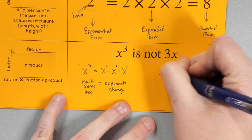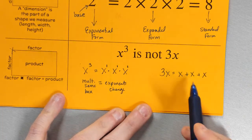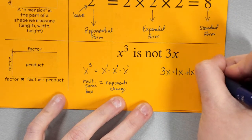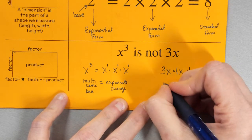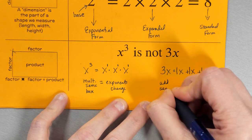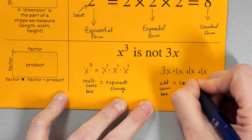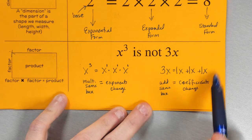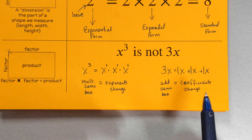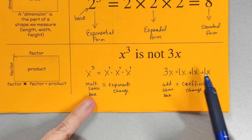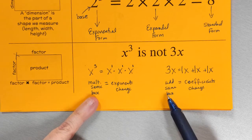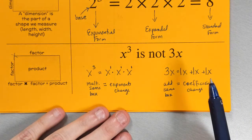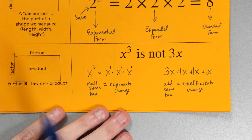Now let's look at 3x. 3x is the same thing as x plus x plus x, because multiplication is repeated addition. All I'm doing is showing 1x plus 1x plus 1x, which turns into 3x. So when I add with the same base, my coefficients change. We can only add things with the same base — if they're not like terms, I can't add them. But I can multiply things with different bases, and we're going to talk about that in a bit.